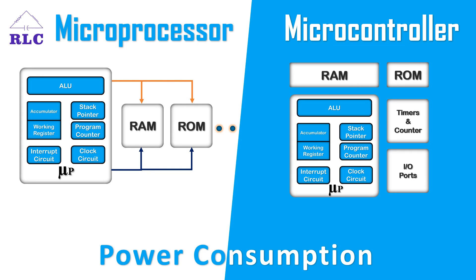Next, we look at power consumption. A microprocessor has more hardware connected to it, which increases its power consumption. Whereas due to compact size and less hardware, power consumption is less in a microcontroller.